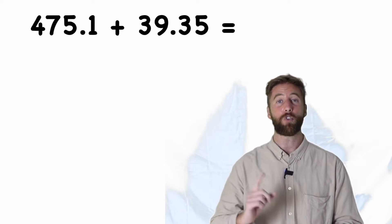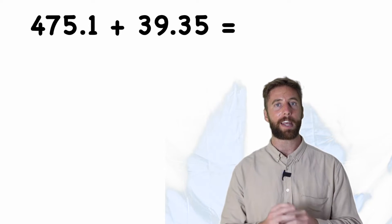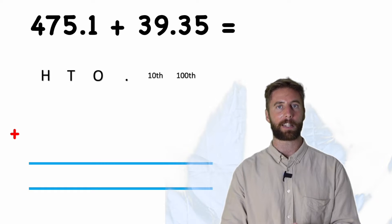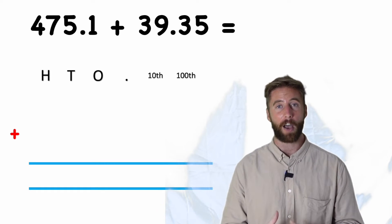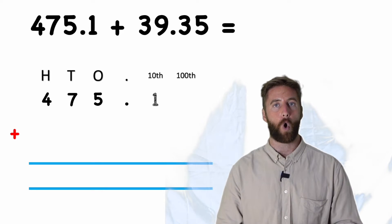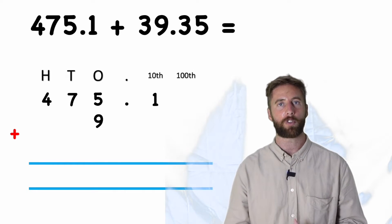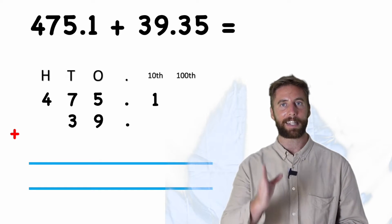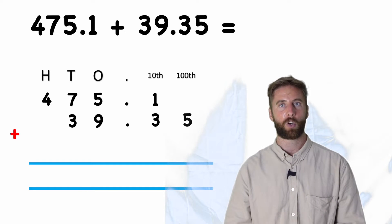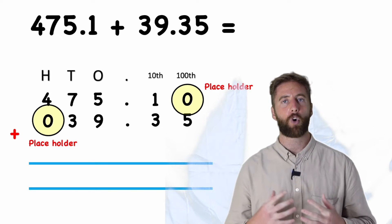Let's begin. I'm going to set up my place value chart in column method. I can see that I need ones, tens, and hundreds, and also tenths and hundredths after my decimal place. For four hundred and seventy-five point one: I have five ones, seven tens, four hundreds, a decimal point, and one tenth. Now for thirty-nine point three five: thirty-nine is made up of nine ones and three tens. I put my decimal in, and I can see the decimals are already starting to line up. I have three tenths and five hundredths. Now I have two gaps — I'll put in placeholders. Now we're ready to start.